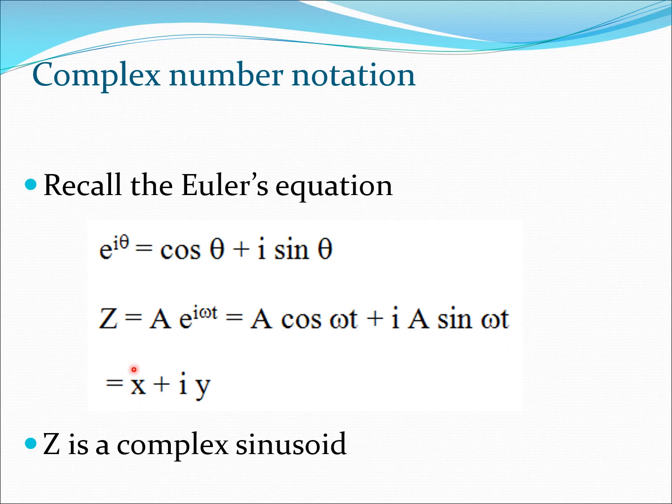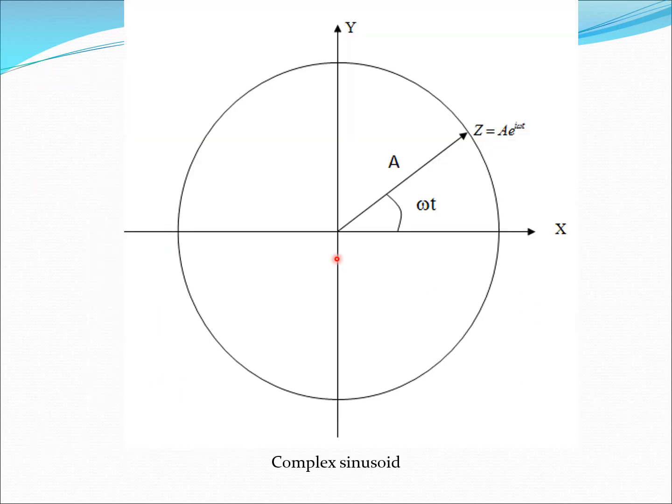So this of course is a real part and this is the imaginary part. So I can write this as a complex number. So in this case z would be a complex sinusoid. The complex sinusoid can be plotted. So if you were to look at it at any point here on this circle, the distance here would be the real part and the distance here would be the imaginary part. And this would be the amplitude of this complex sinusoid.